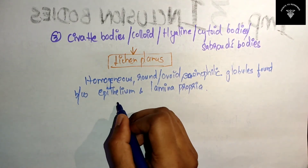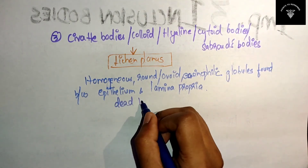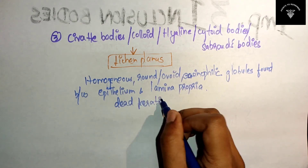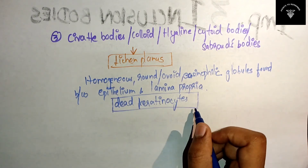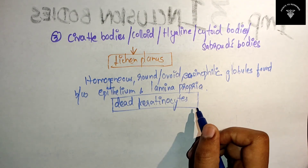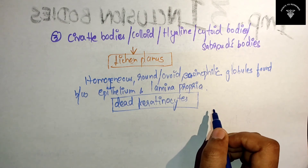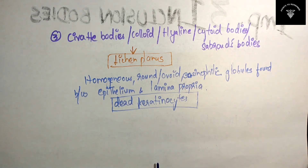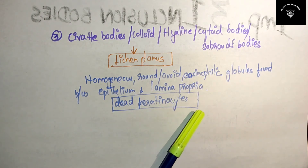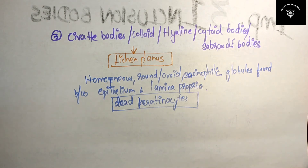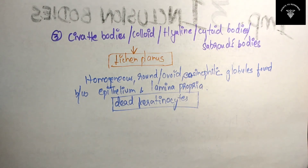The main important thing to remember is that Civatte bodies are dead keratinocytes — or other necrotic epithelial components — which are transported to the connective tissue for phagocytosis. Remember: Civatte bodies, also called colloid bodies, hyaline bodies, cytoid bodies, or Sabroe's bodies, are seen in lichen planus.